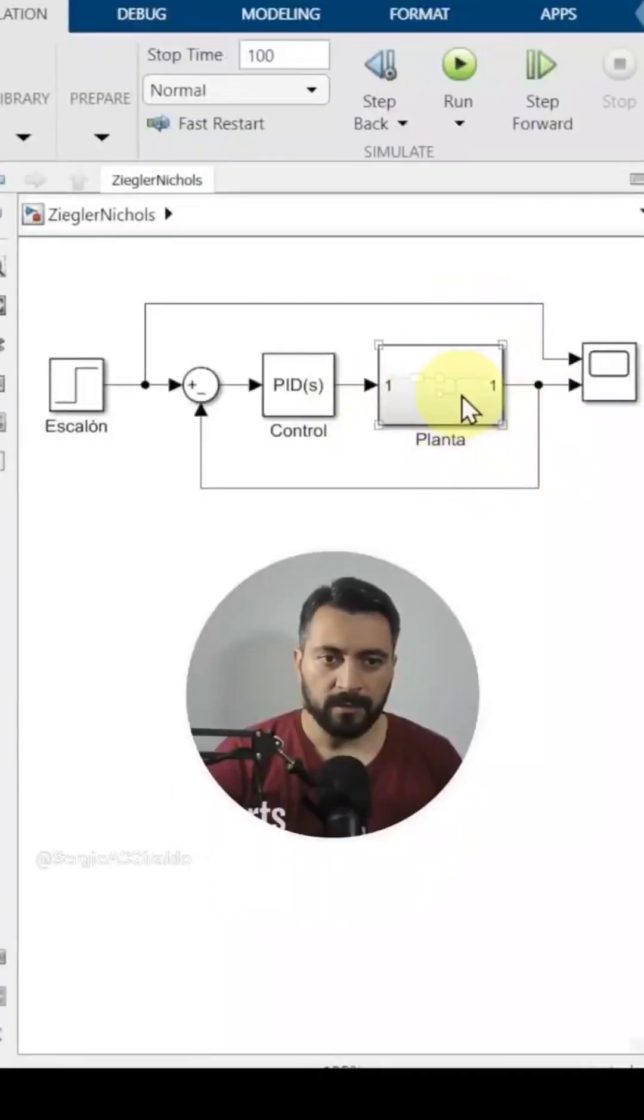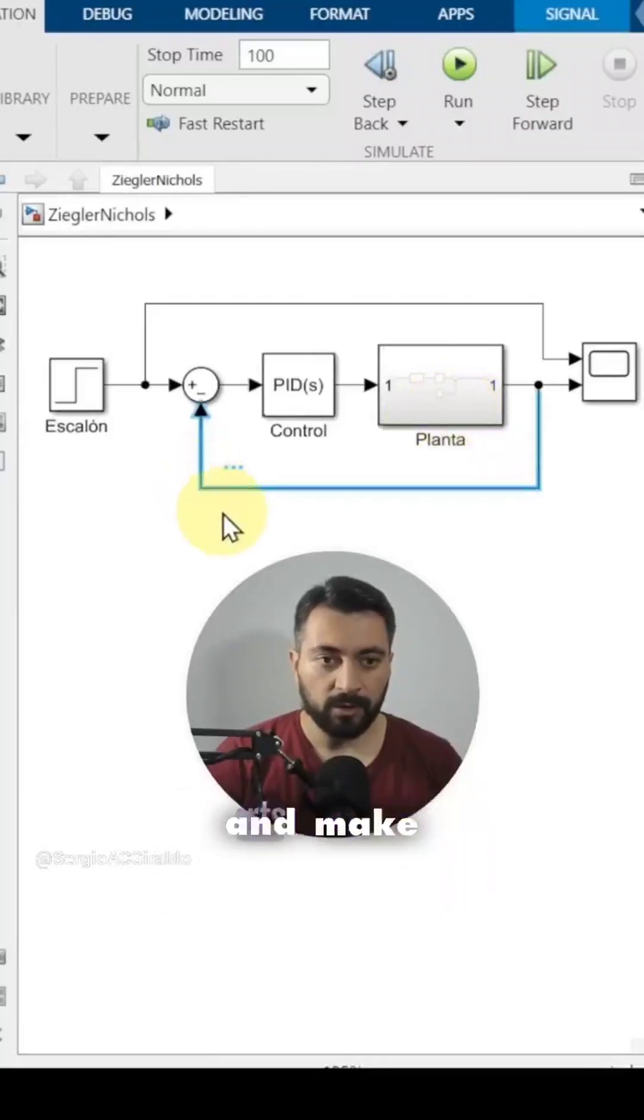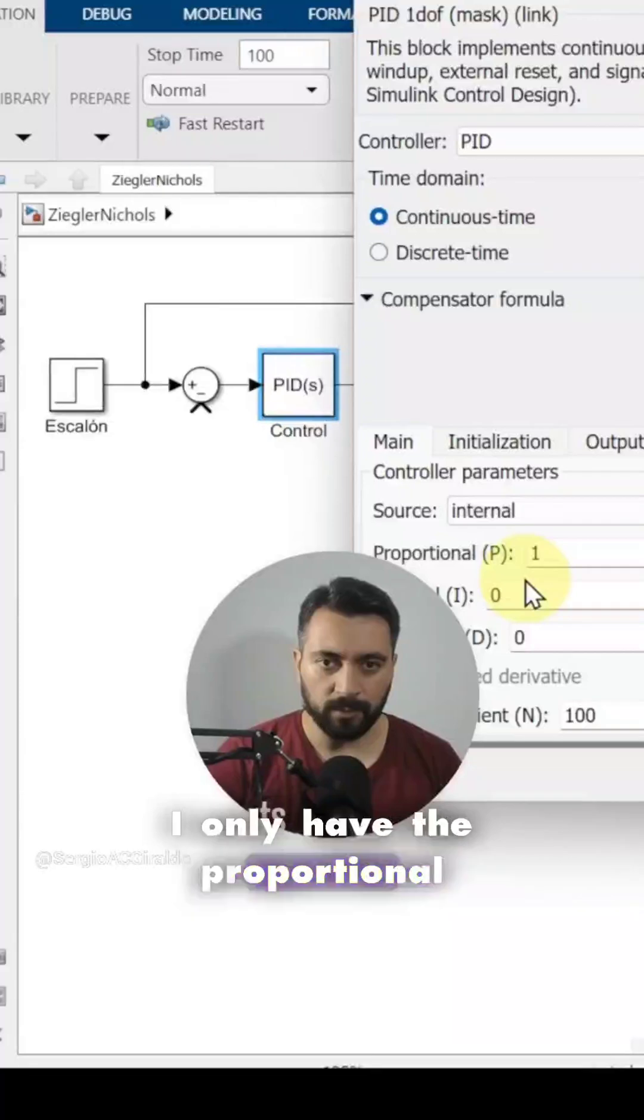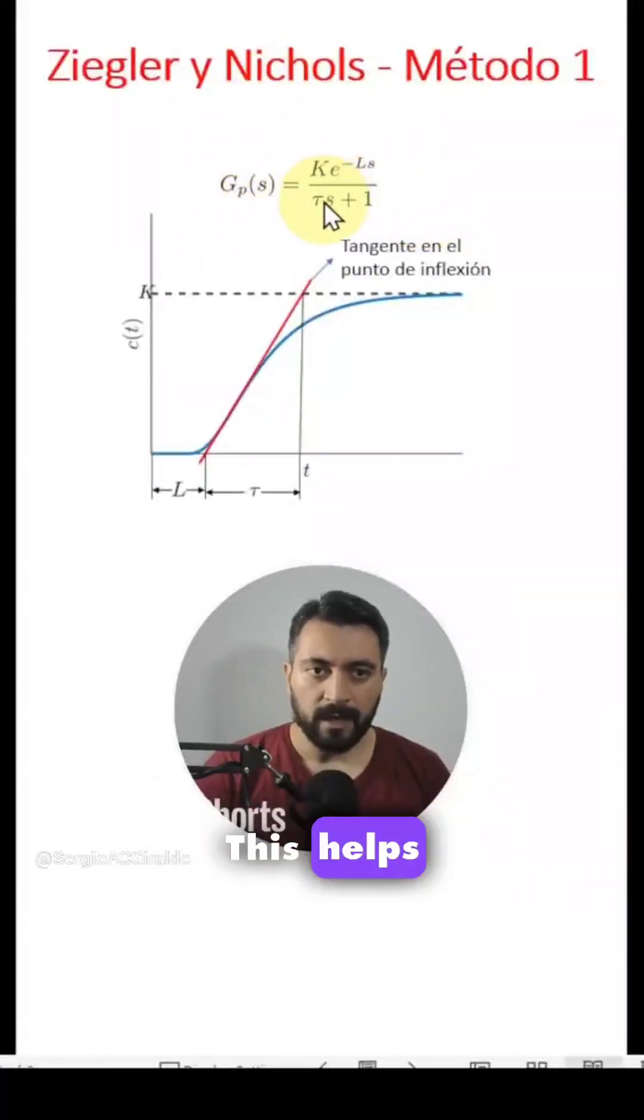If I have the following closed loop system, the first step is to open the loop and make sure that here, in the PID controller, I only have the proportional action enabled. This helps me identify a first order system with delay.